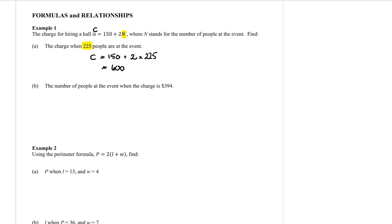Part b: find the number of people at the event if the charge is $394. Using the formula c equals 150 plus 2n, this $394 is the charge — it's the c. So I'm going to substitute that in. The charge is 394, and that equals 150 plus 2n. Now what I'm trying to do is find the number of people — I'm trying to find the n.